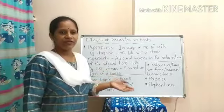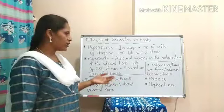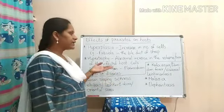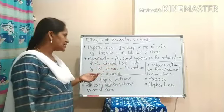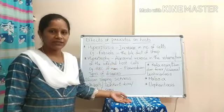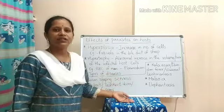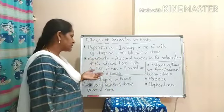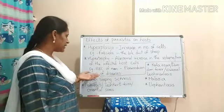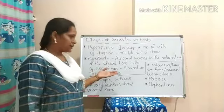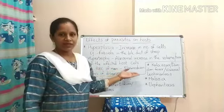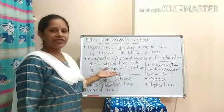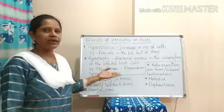The next type of effect shown by the parasite on the host is hypertrophy. Hypertrophy is an increase in the volume or size of the infected host cells. This condition can be seen in the RBC of man in malaria, where Plasmodium causes an increase in the volume and size of the RBC.